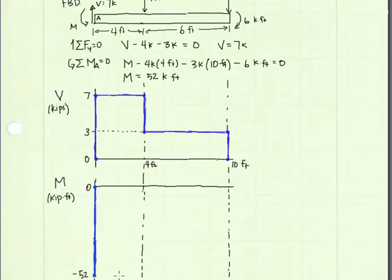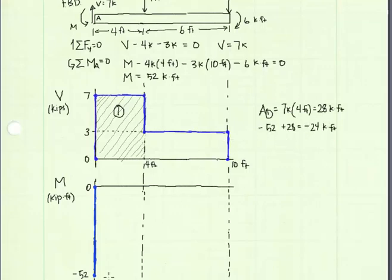Over the next 4 feet, we can look to our shear diagram to understand what's happening. We have a positive slope equal to 7 kips. That means we will have a positive slope on our moment diagram. And we can integrate the shear diagram between 0 and 4 feet to find the change in our moment diagram, which is going to occur from 0 to 4 feet. I'll call this hatched area, area 1, and we will calculate what it is. It's equal to 28 kip feet. So we are going to get a jump in our moment diagram from negative 52 to a value of negative 24 kip feet.